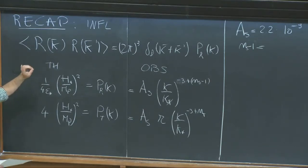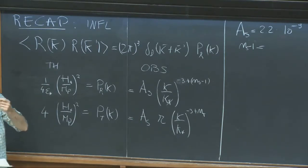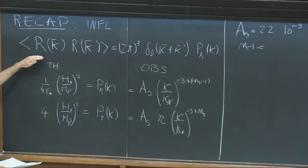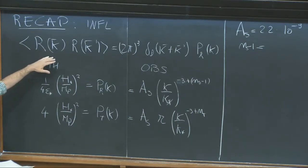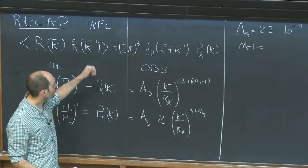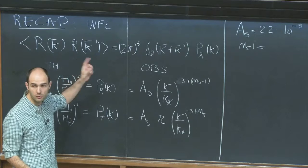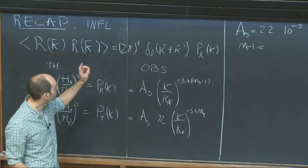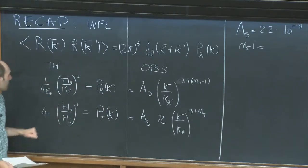We discussed that there is only one variable we need to care about as far as scalars are concerned, and this is the gauge-invariant curvature perturbation on co-moving hyperslices R, or its brother Zeta. In our convention, the basic information is the two-point correlation function, which in Fourier space can be written as the power spectrum P of R. And that power spectrum we computed last time.